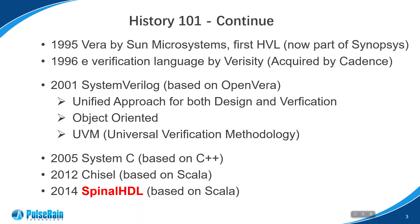Around the same time, folks from the computer science world started to get their hands on HDL and HVL as well. Every digital component — such as an AND gate, NOR gate, or flip-flop — can be modeled as a class. In that sense, digital design and verification can all be accomplished using a high-level programming language such as C++. This approach is also favored by system designers, as the system model is often in C++ too. With SystemC, everything from system design all the way to RTL design can be accomplished using C++ only.